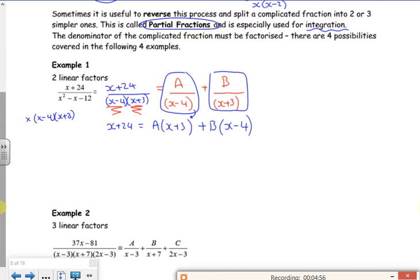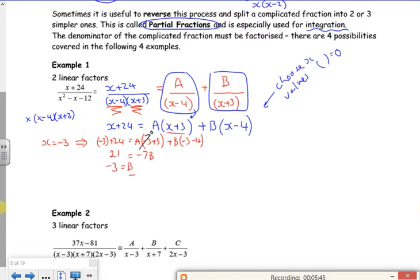I need to find the numbers now that work. So what I do is, I'm going to choose x values that make a bracket equal to 0. So if you look in the first bracket here, to make that equal to 0, I'm going to use x equals minus 3. So B lots of minus 4. So minus 3 plus 24 is 21. That just disappears because it's 0, and I've got minus 7B. So that means that minus 3 is B.